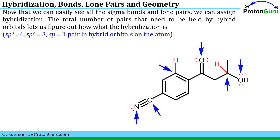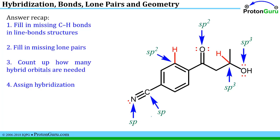I've highlighted the filled-in bonds and lone pairs in red, and now we can easily see all the sigma bonds and lone pairs. We should now be able to assign the hybridization by counting how many orbitals we need to hold lone pairs and sigma bonds. Note that in a triple bond, two of the three bonds are pi bonds, so you only need hybrid orbitals for the sigma bond. SP3 hybrid atoms hold four pairs of electrons in lone pairs or sigma bonds, so a carbon with four sigma bonds is SP3.